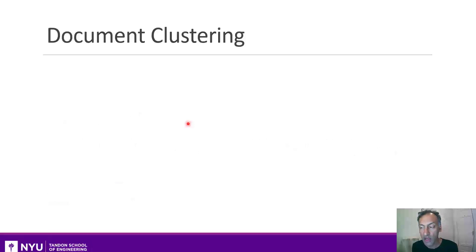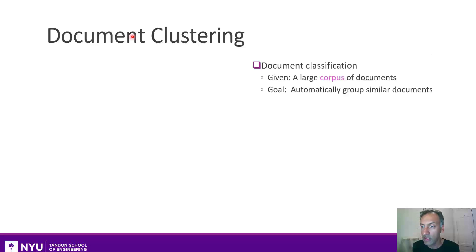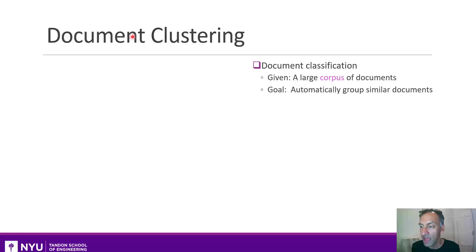To give you an idea of a typical example of clustering, let me introduce the idea of document clustering. In document clustering, you have a large corpus of documents — that is, a large group of documents — and it doesn't come to you in any particularly sorted way, and you want to automatically group documents that are similar.